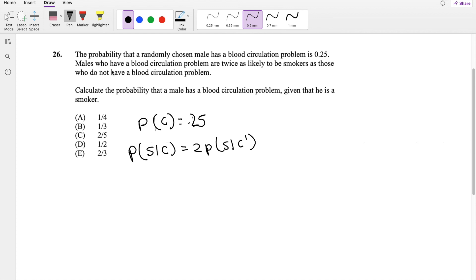Do you agree with this? Males who have blood circulation problems, so given they have circulation problems, they're a smoker, this probability is twice as likely as those who do not have circulation problems. So yeah, that's a true statement here.